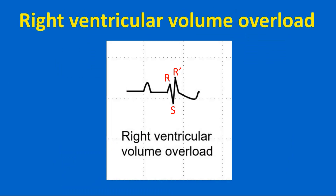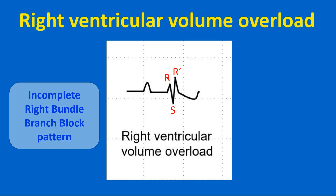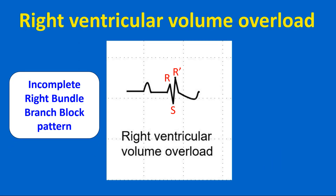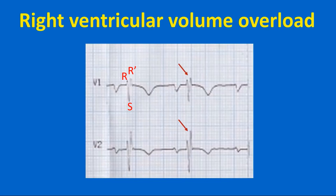Right ventricular volume overload is manifest as an RSR' pattern in V1, representing an incomplete right bundle branch block pattern. This is typically seen in atrial septal defect with large left-to-right shunt. The RSR' pattern is seen in V1 and V2, suggestive of incomplete RBBB pattern, which can occur in right ventricular volume overload.